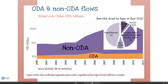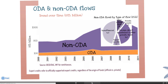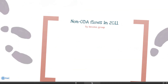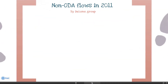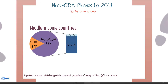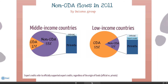Non-ODA flows have gained importance over time. However, they are not equally distributed across countries. While these flows account for over 80% of the total resources in middle-income countries, they represent less than 20% of resources received by low-income countries.